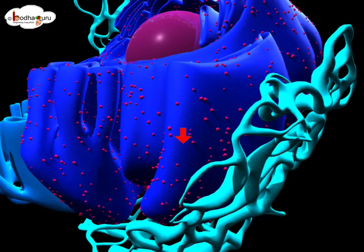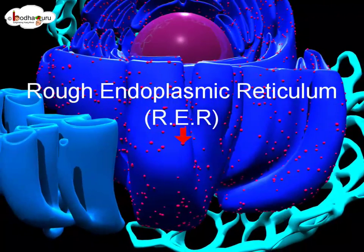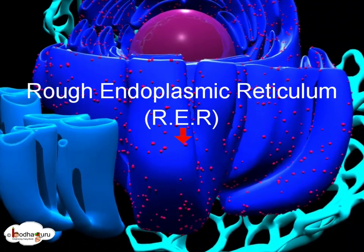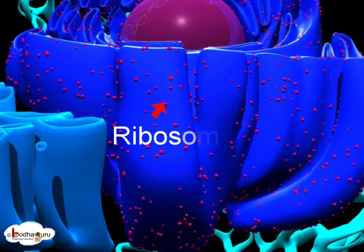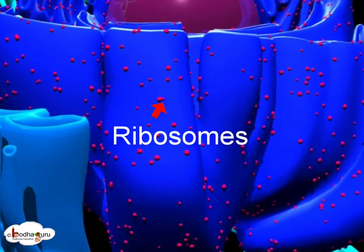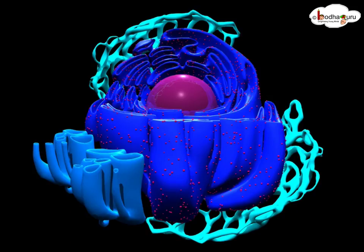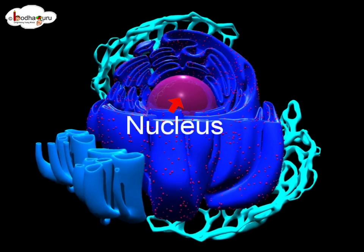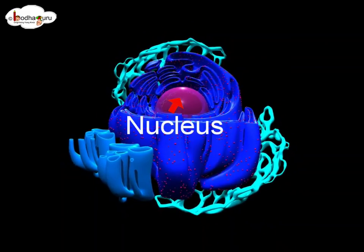The outer membrane of the rough endoplasmic reticulum, in short RER, has ribosomes that are the sites of protein synthesis. The rough endoplasmic reticulum network is connected to the outer membrane of the nucleus.